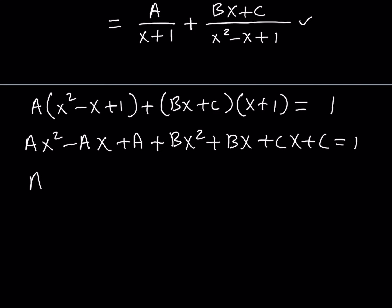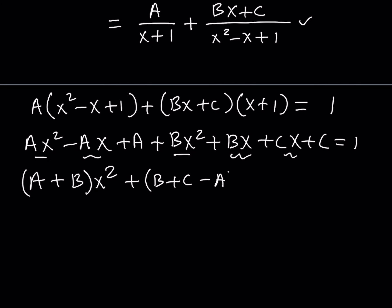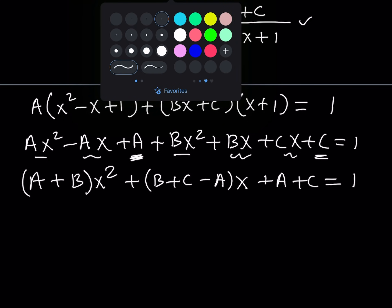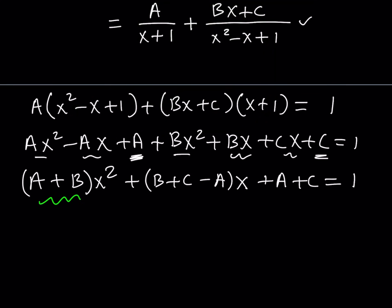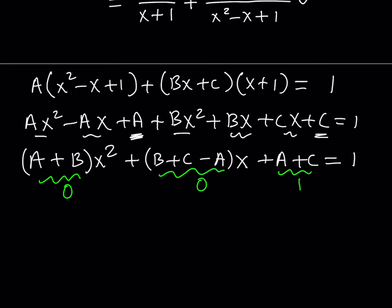Let's combine like terms. We get (a plus b) times x squared, then we have the x terms: (b plus c minus a) times x, and then the constant term: a plus c. Now since both sides are equal as polynomials for all values of x, that means the coefficient of x squared is 0, the coefficient of x is 0, and the constant term equals 1. This gives us a system of equations.